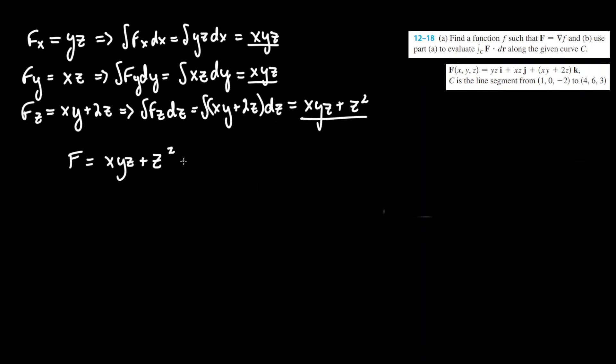That is the final answer. Sometimes you may have to say plus k in parentheses, but since we're given a definite boundary we don't have to do that. This is the answer to part a, this is f of xyz.